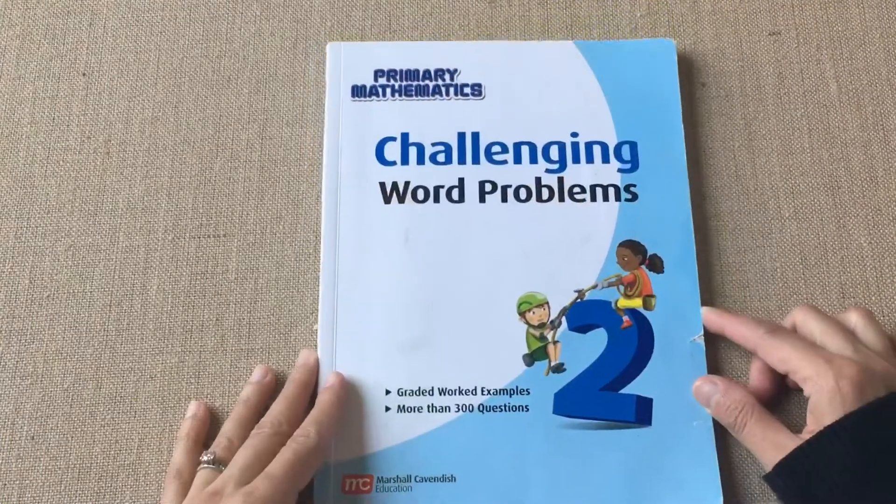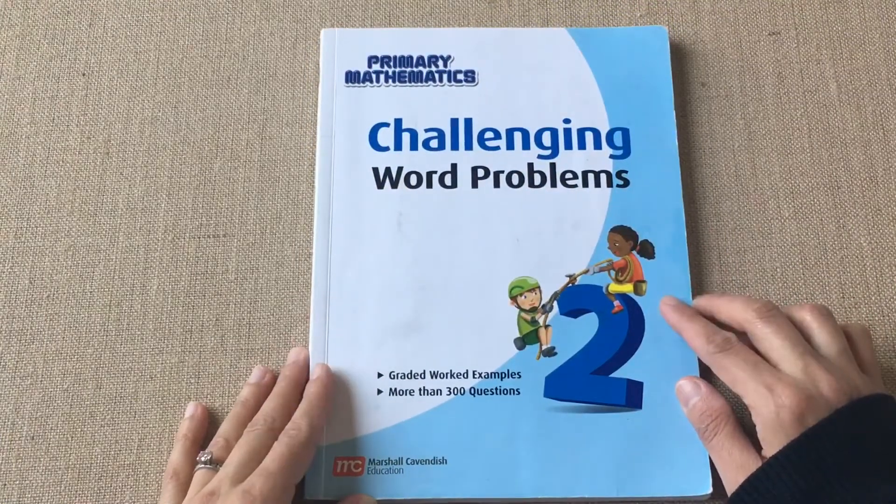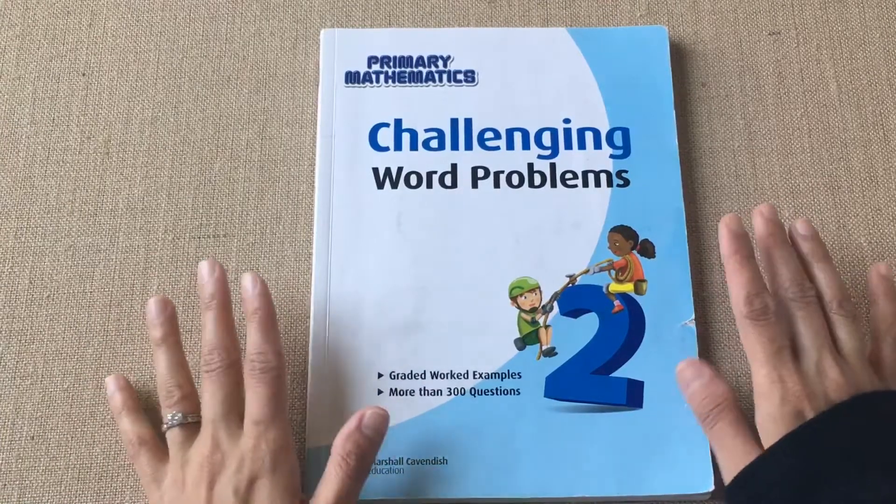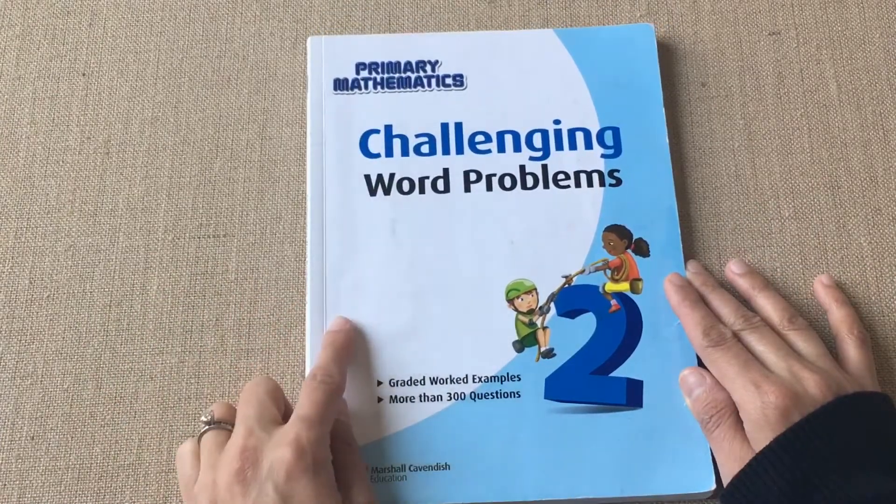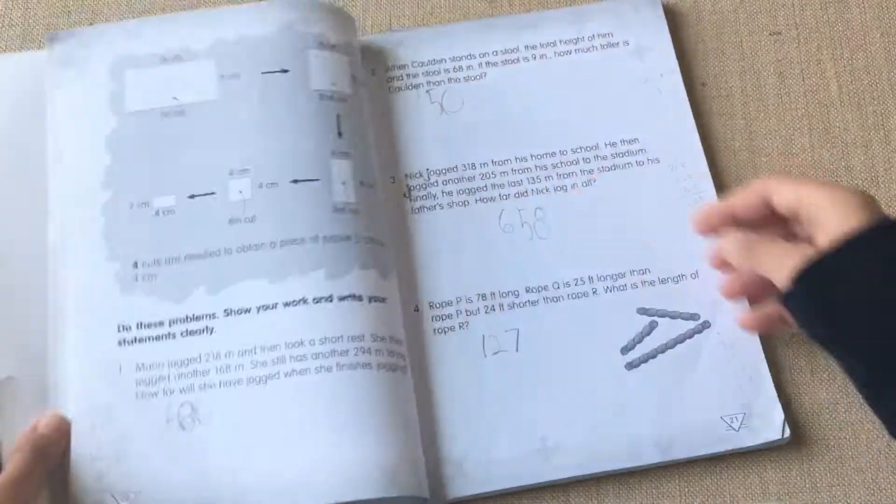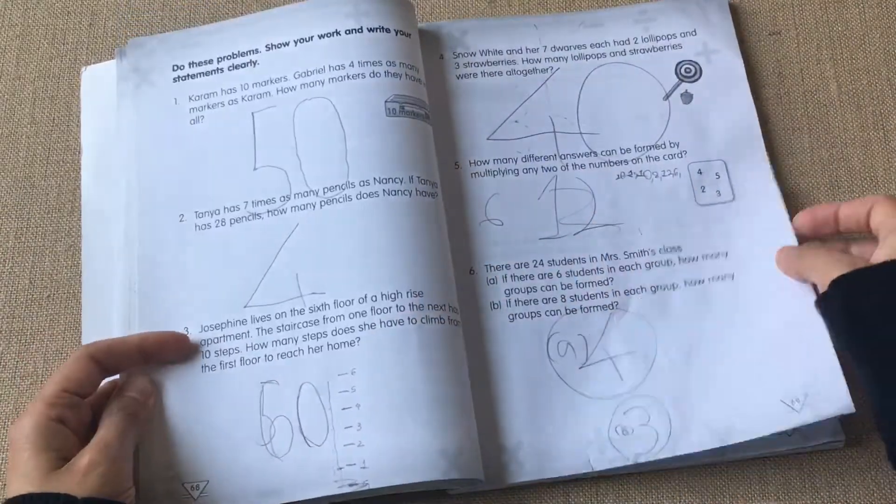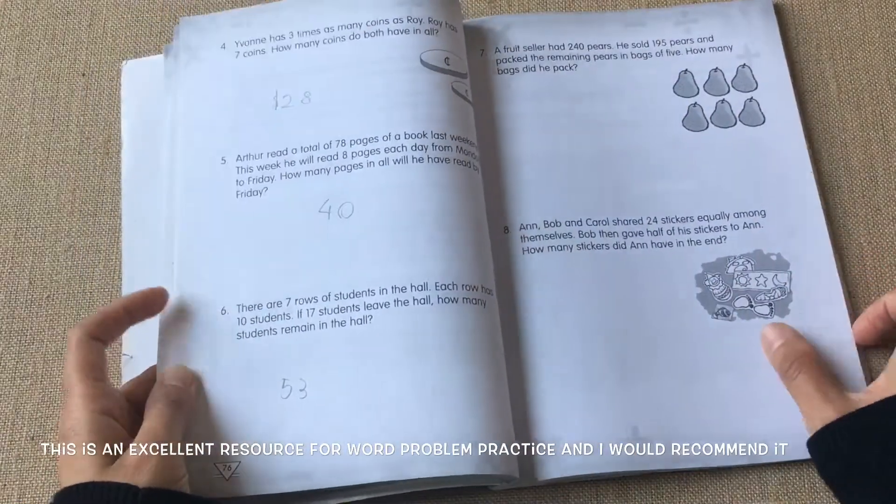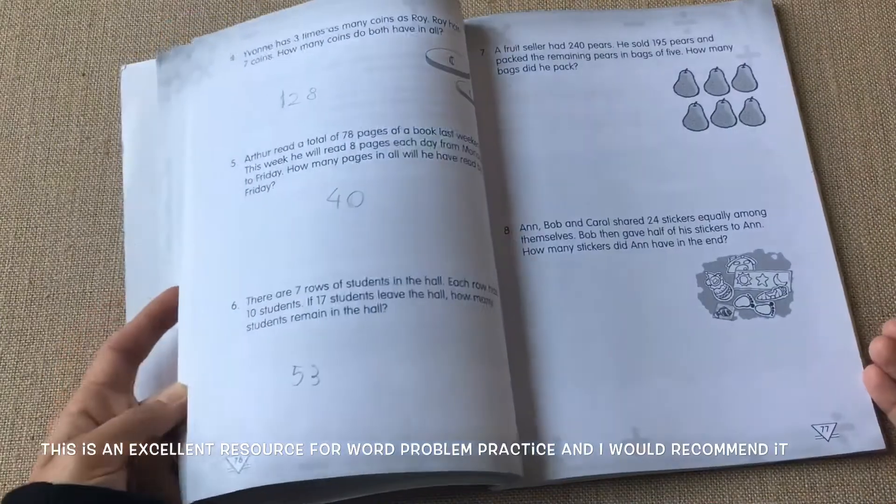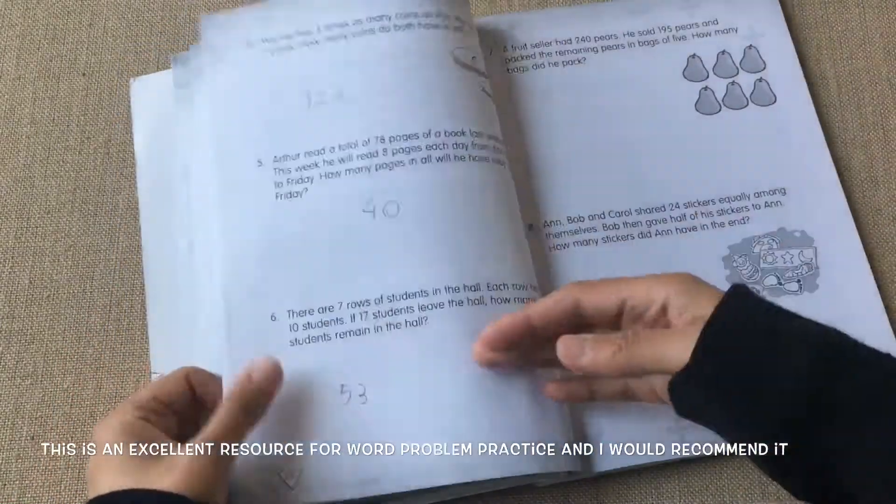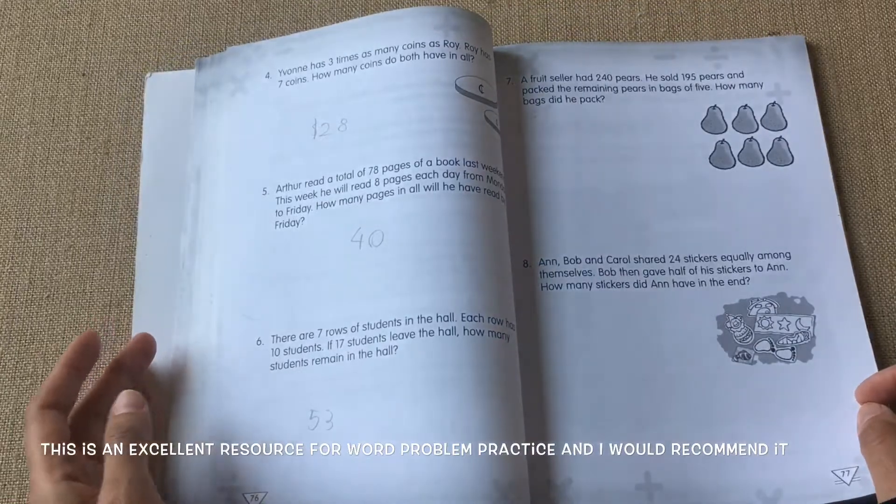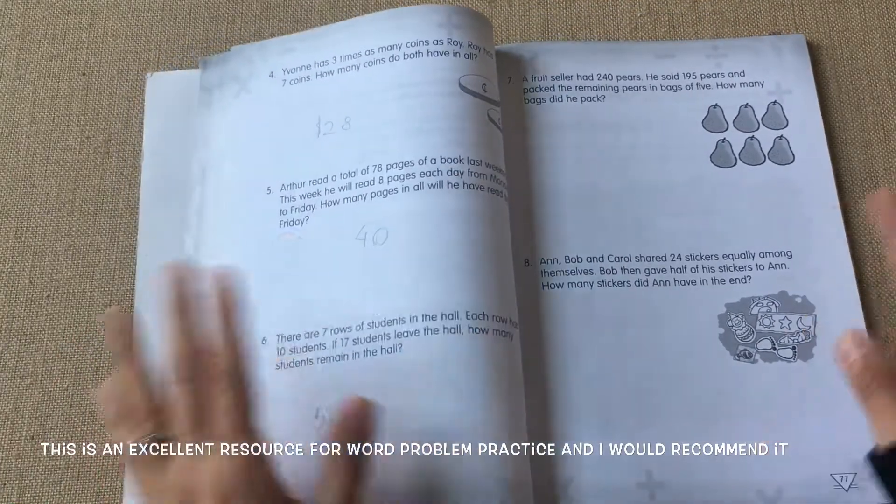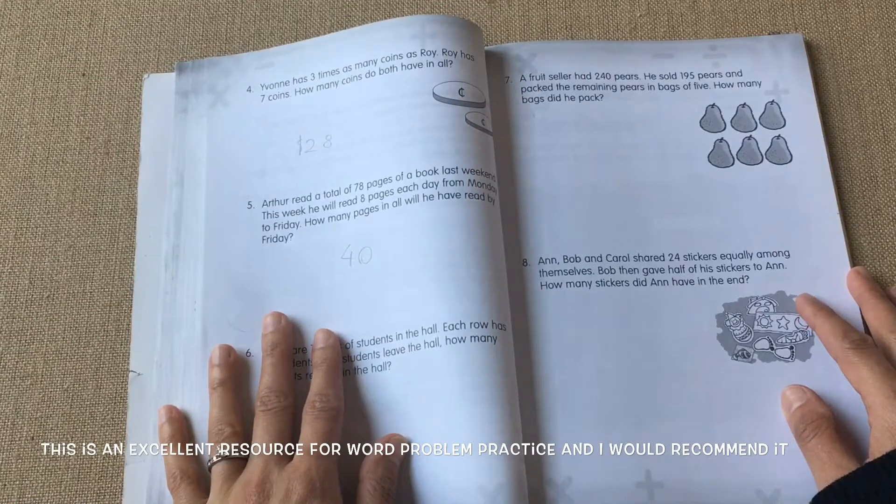That's about it from the teaching manual. The extra supplement is called Challenging Word Problems. This is one of the supplemental books you can buy. I bought this when he was in second grade because I thought maybe it would be helpful. To be honest with you, he does not have any real issue with word problems.